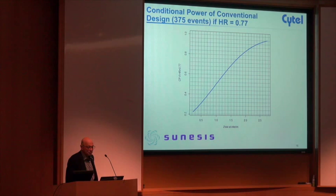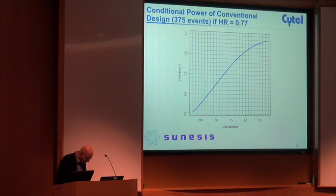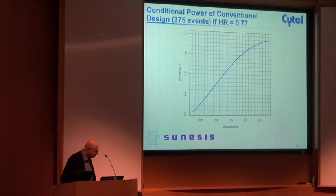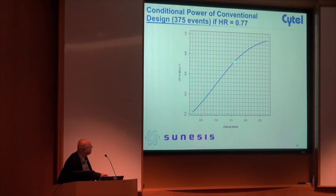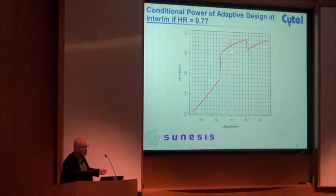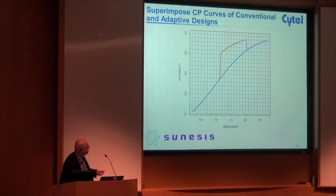In other studies, we've used other methods. Adaptive design is a generalization of a group sequential design — not the other way around. Here you have the original group sequential design with one interim O'Brien-Fleming type analysis and possible early stopping, but no increase in events. And here is the adaptive design with the promising zone, where if you enter the promising zone, you increase the number of events and the conditional power goes up. You can always add an adaptive component to a group sequential design.